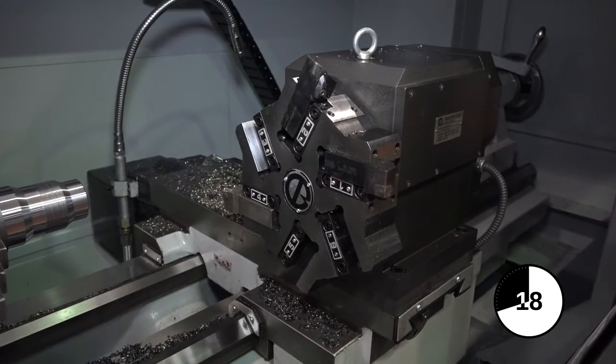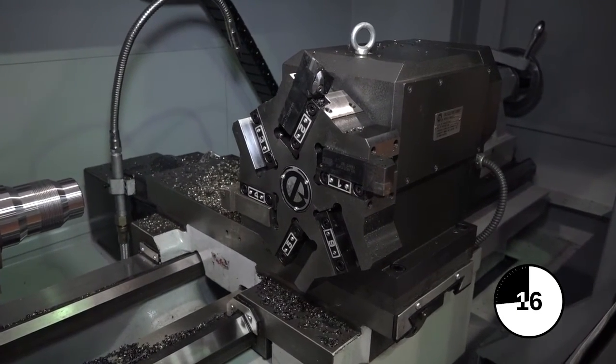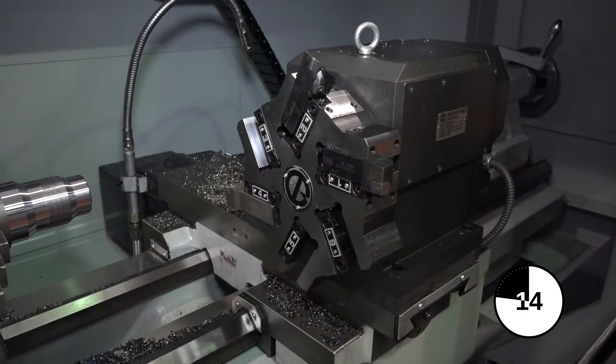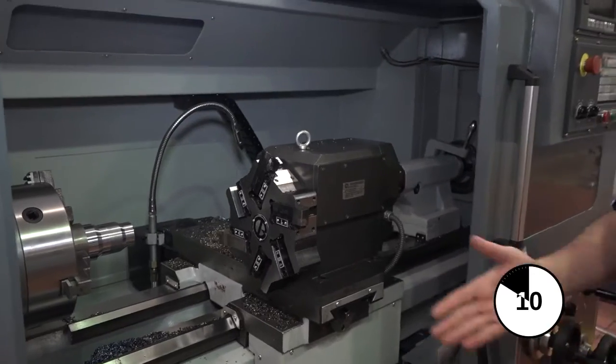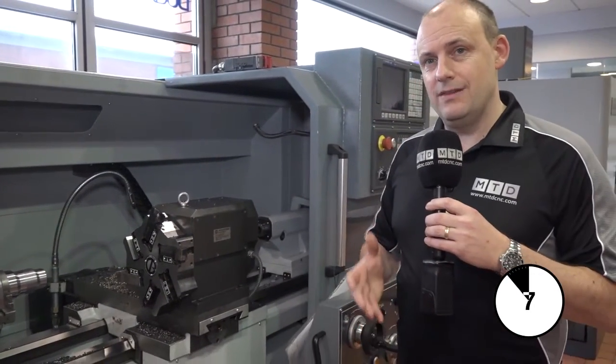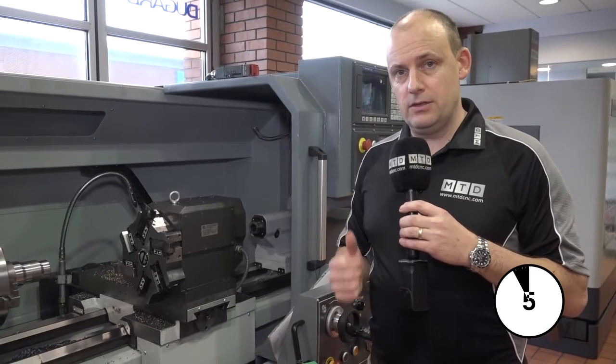Some turrets also allow you to have driven tools so you can do milling, but it is a more productive method of holding tools and getting more from your machining process. So this is a turret. What we had before was a tool post, and they're the fundamental differences between the two.